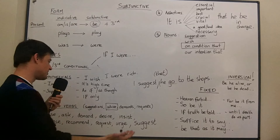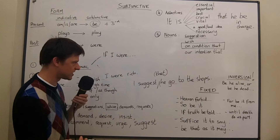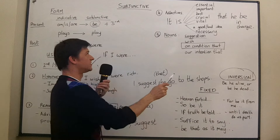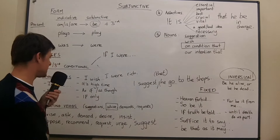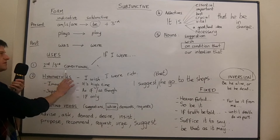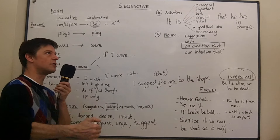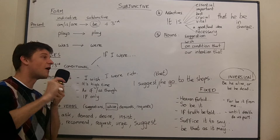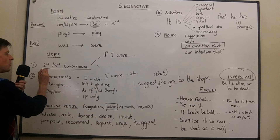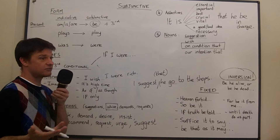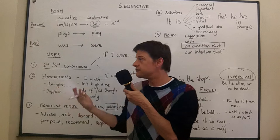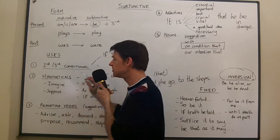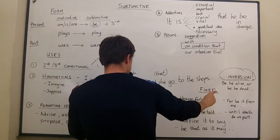You can often see inversion with the subjunctive, very often in second and third conditional. For example: 'had I been involved, it would have been much more successful' — the same as 'if I had been involved.' Or 'were I to be rich' / 'were I rich, I would buy a yacht.' So you see inversion in second and third conditional and very often in subjunctive generally.